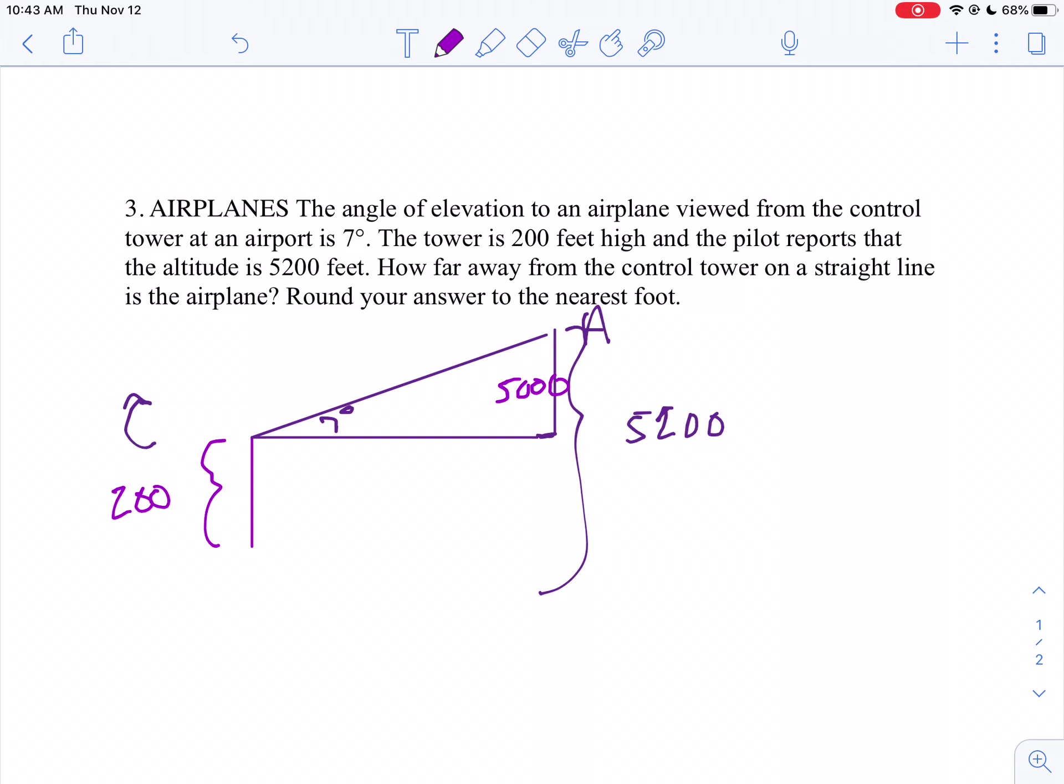And it says, how far is the control tower on a straight line? So I'm guessing on this one we really want this hypotenuse. We want to find the length of the hypotenuse because that would be your straight line. If they said horizontal distance, then I would find the horizontal segment.